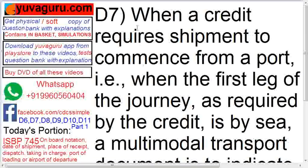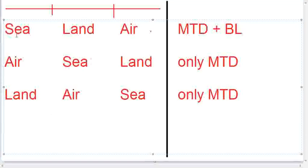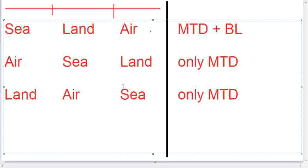D7. When a credit requires a shipment to commence from a port and the first leg of the journey as required by the credit is by sea, an MTD is to indicate a dated on-board notation, and in this event paragraph E6 B2D will also apply — which regards the bill of lading. So here is the chart: if the credit requires the first leg to be by sea, then MTD plus BL would be applicable. If it is not by sea — first leg by any other mode — then only MTD would be applicable.